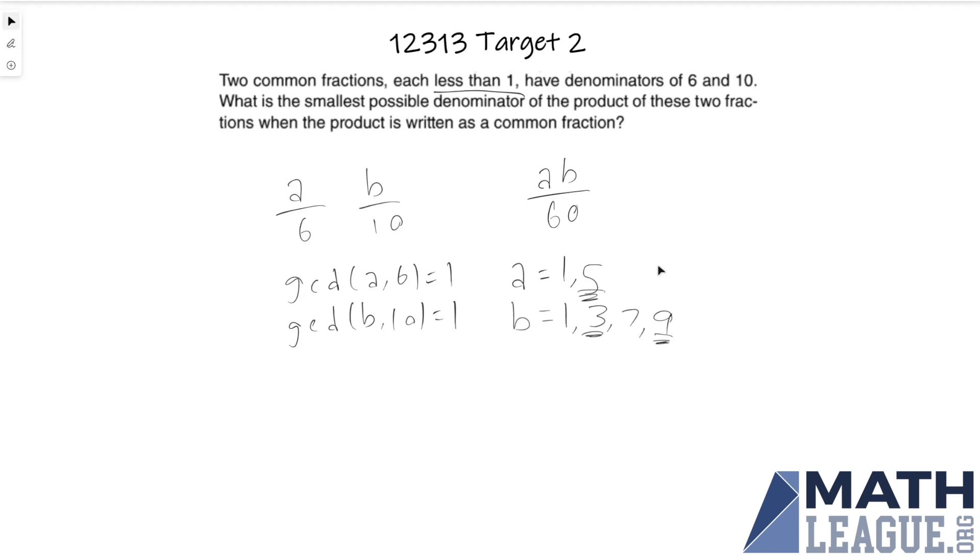So it would be optimal, the best case scenario, to let a equal five and b equal either three or nine. So if we do three times five, or five times three in either order because it's commutative, and we divide by sixty, then we get fifteen over sixty which equals one over four.